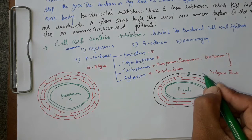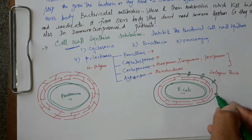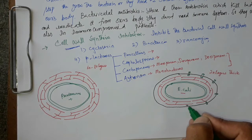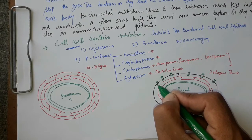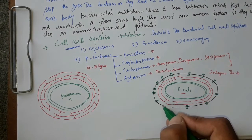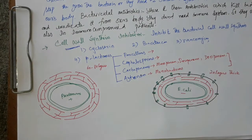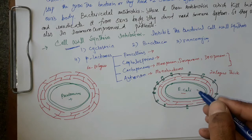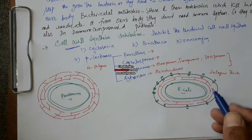Although gram-negative bacteria have this additional lipid bilayer, they have certain channels for transport of substances. These channels are called porin channels. These channels vary among different species of gram-negative bacteria, and the opening of these channels also differs, which determines whether some gram-negative bacteria are susceptible or resistant to the action of cell wall synthesis inhibitors.